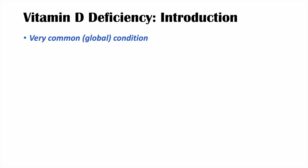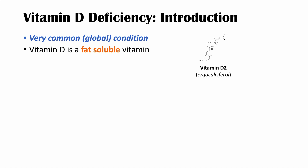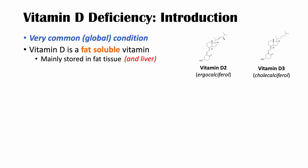Vitamin D deficiency is actually very common around the world — it is a global phenomenon. Vitamin D itself is a fat-soluble vitamin. There are multiple forms of vitamin D: one is vitamin D2, also known as ergocalciferol, and there's also vitamin D3, which is cholecalciferol. Because vitamin D is a fat-soluble vitamin, it is mainly stored in fat tissue.